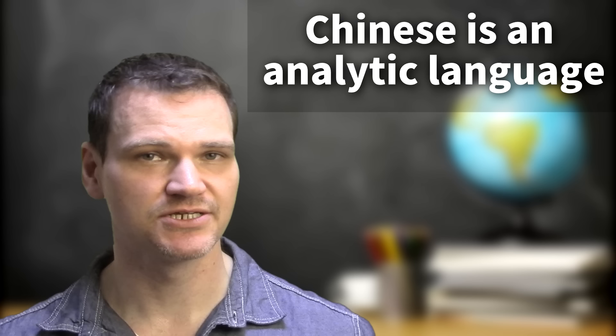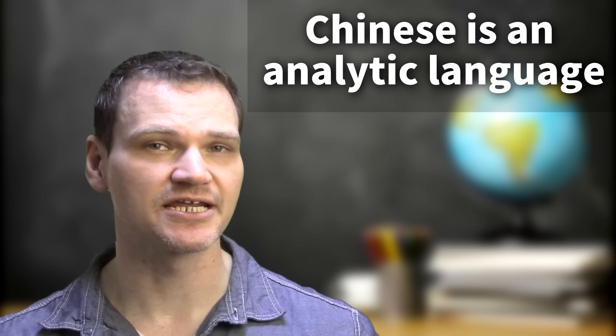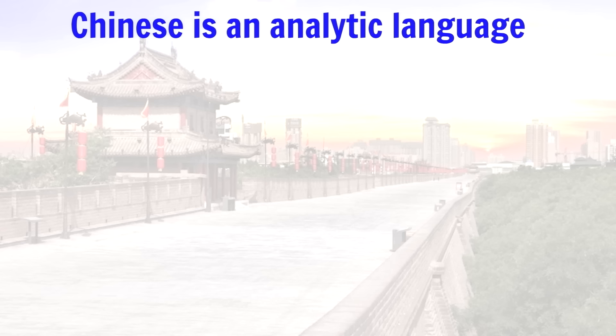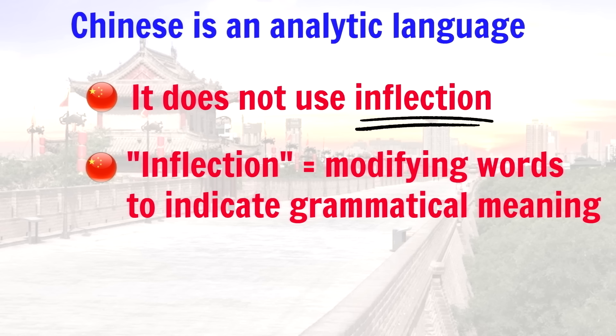Chinese is an analytic language, which basically means that you create a sentence by placing independent elements side by side. Analytic languages like Chinese do not use inflection. Inflection means modifying words to indicate some kind of grammatical meaning, like plural, gender, tense, or case. You don't change any part of a word in order to change its meaning. Instead, you can add to the meaning of that word by adding an extra word next to it.